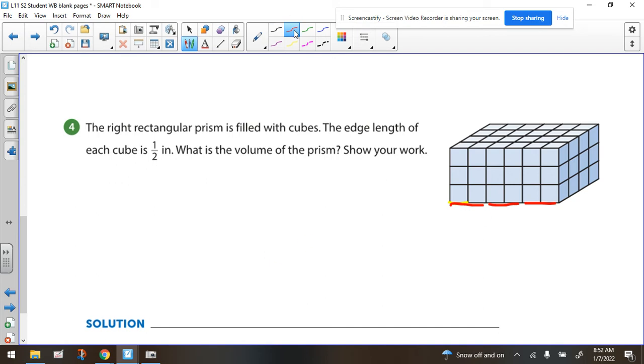So we have a couple ways we can approach this. One way is to figure out how many of the half inch cubes we have. So we have going this way, we have one, two, three, four, five, six of the half, which means we would have three of the full cubic units. And going back, we have one, two, three, four of the half. And going up, we have one, two, three of the half.